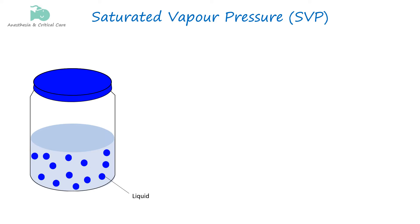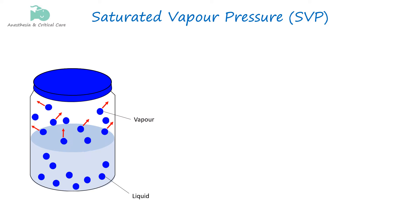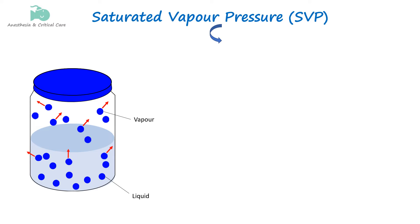When the anesthetic agent is placed in a tight container, the vapor molecules exert pressure on the walls of the container. This is called vapor pressure. Over time, the pressure exerted by the vapor stops further liquid from vaporizing by compressing the vapor molecules back into liquid. At this point, the vapor is said to be saturated, meaning it cannot hold any more molecules and the system is in equilibrium.